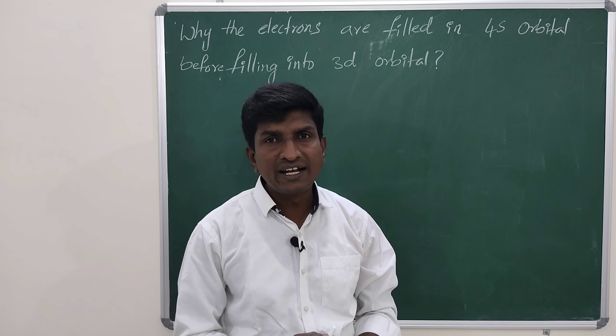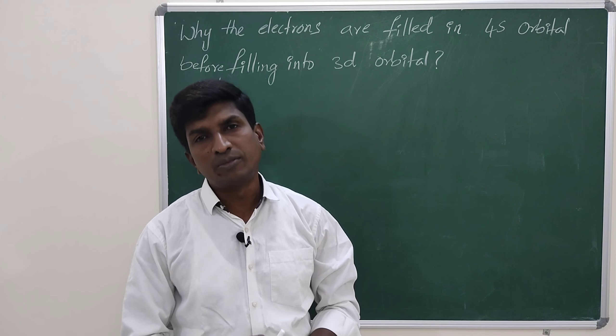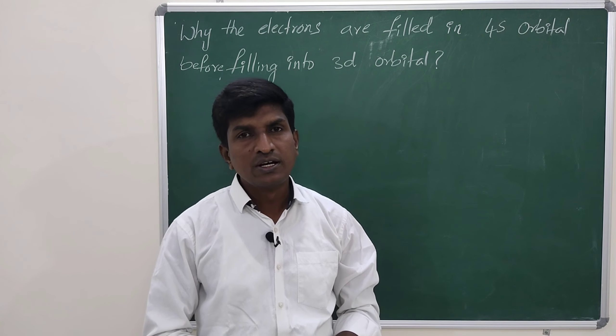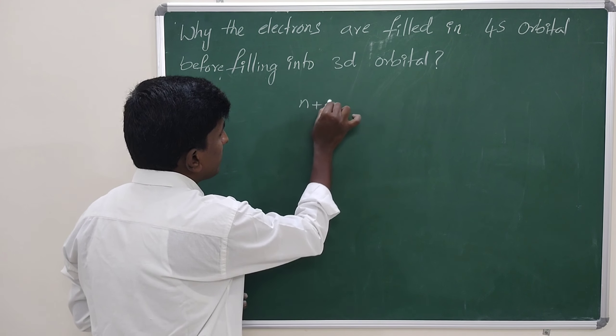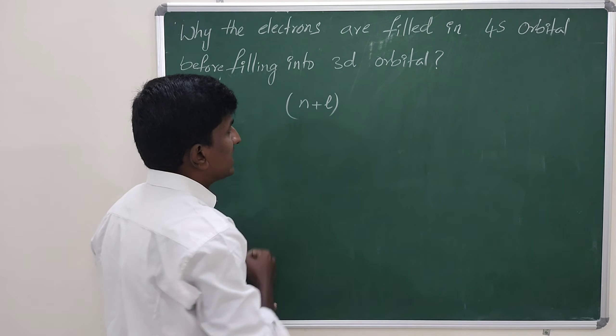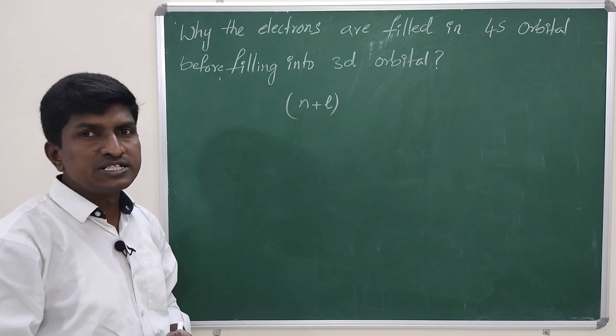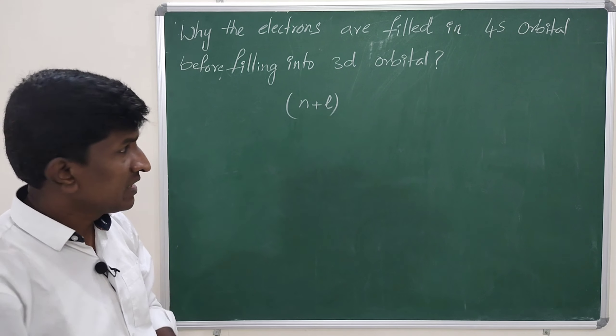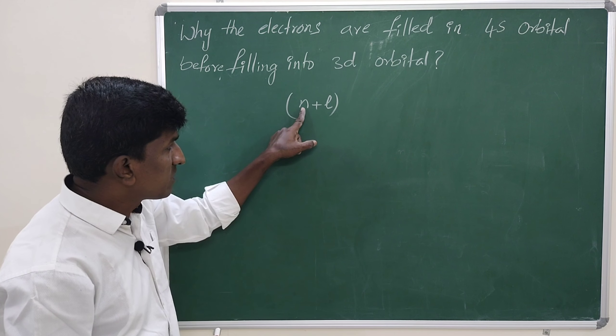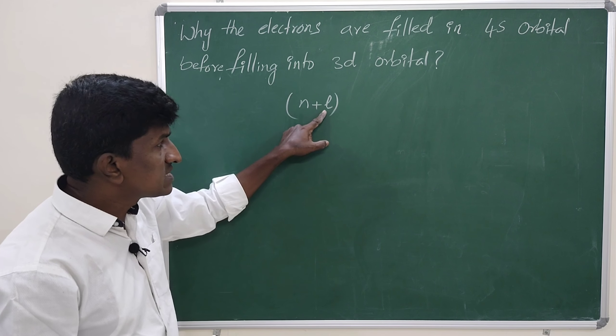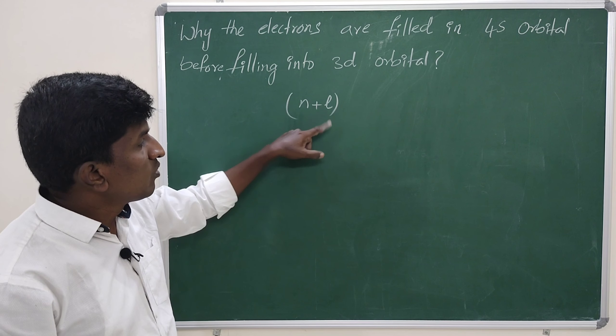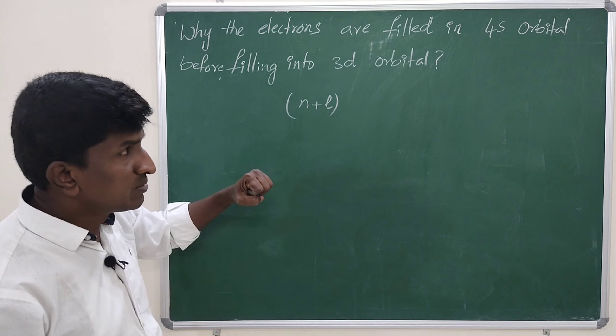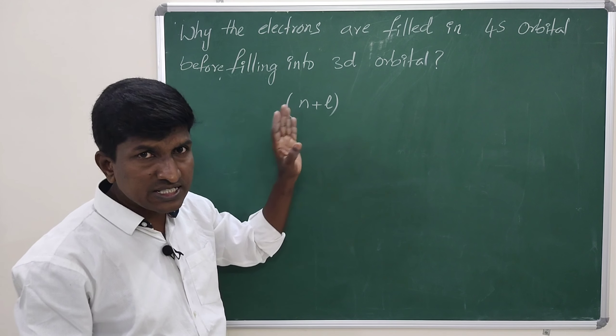How we calculate energies of these orbitals? Aufbau explained that with the help of n plus l value, we need to calculate the energies of orbitals. Then here, n is principal quantum number and l is angular momentum quantum number. So, why are the electrons filling into the 4s first? Let us discuss this.